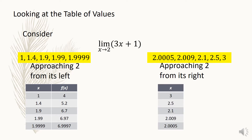Let us create a table of values for x. We will use 3, 2.5, 2.1, 2.009, and 2.005. To find the values of f of x: if x is equal to 3, then f of x is 10. If x is equal to 2.5, f of x is 8.5. If x is 2.009, f of x is 7.027. If x is 2.005, f of x is 7.0015.